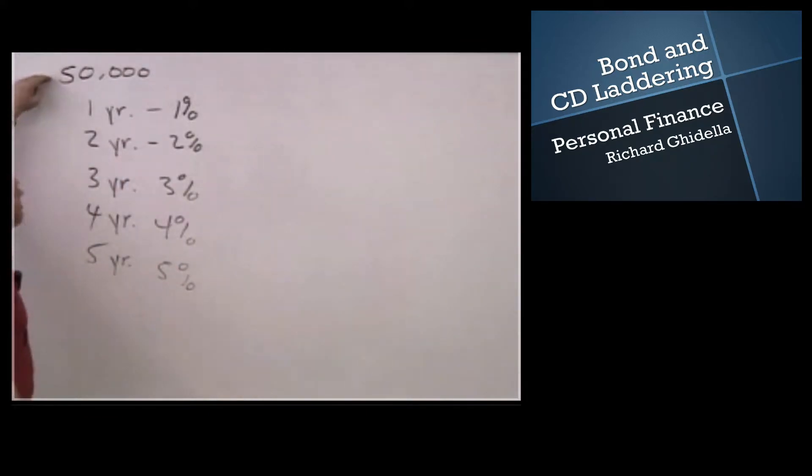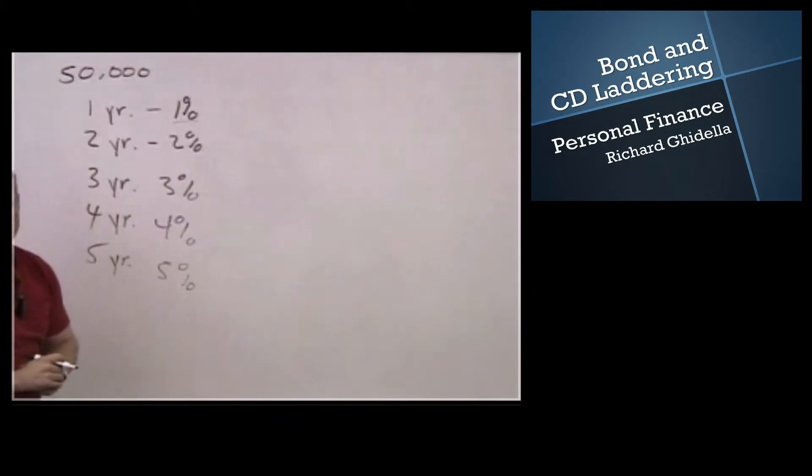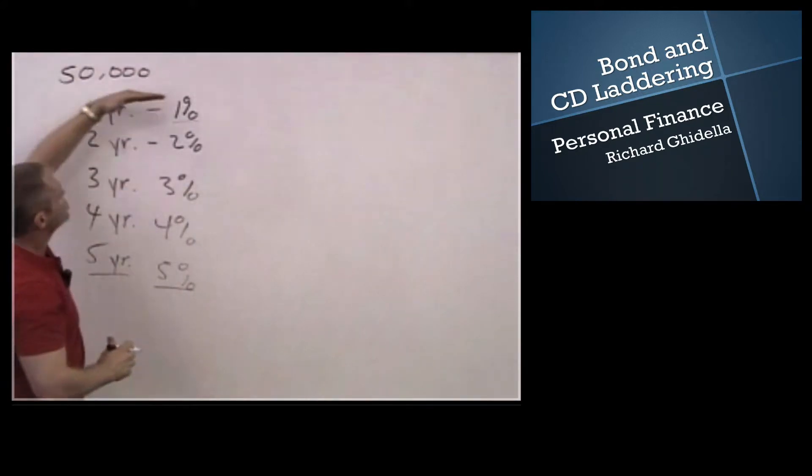If I take my entire $50,000 and invest it at one year, the biggest advantage is that I get my money back in a year. The biggest disadvantage is a really horrible interest rate. If I lock my money up for five years, the biggest disadvantage is it's locked up for five years. But the biggest advantage is I get a much higher interest rate. And so the concept of laddering basically says, let's spread out this money over time, and we create a ladder of maturities.